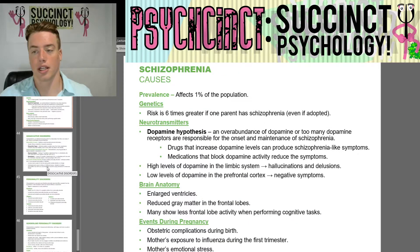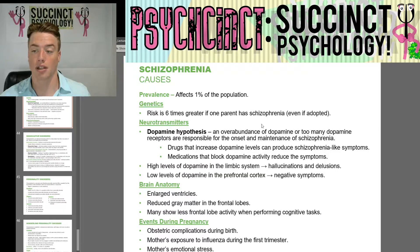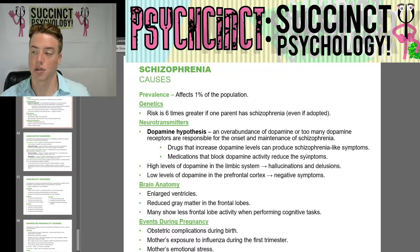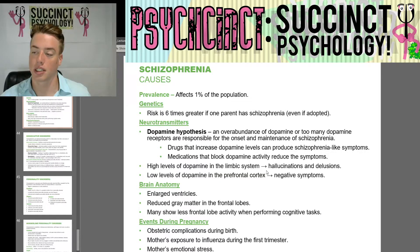Causes of schizophrenia: prevalence affects 1% of the population. Genetics — risk is six times greater if one parent has schizophrenia, even if adopted. Neurotransmitters: the dopamine hypothesis proposes that an overabundance of dopamine, where too many dopamine receptors, is responsible for the onset and maintenance of schizophrenia. Drugs that increase dopamine levels can produce schizophrenia-like symptoms, and medications that block dopamine activity reduce the symptoms. High levels of dopamine in the limbic system lead to hallucinations and delusions, while low levels of dopamine in the prefrontal cortex lead to negative symptoms.